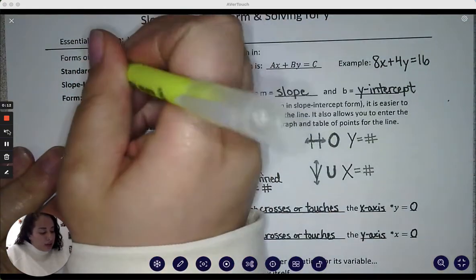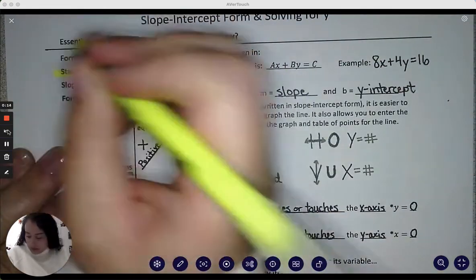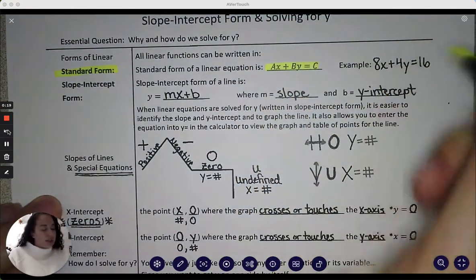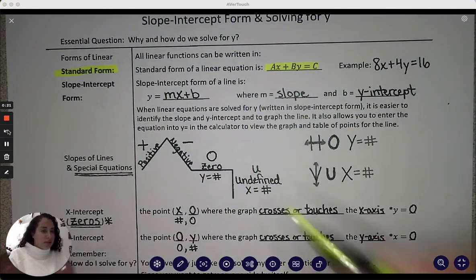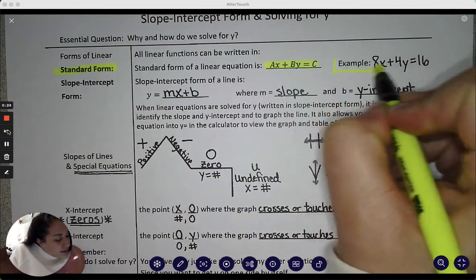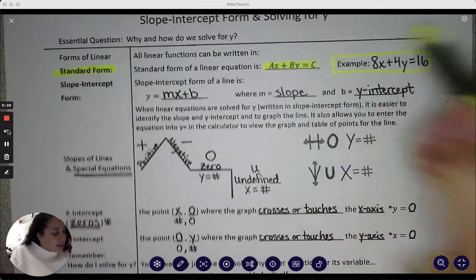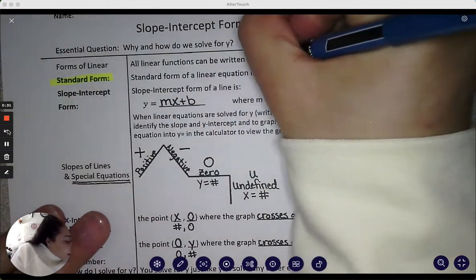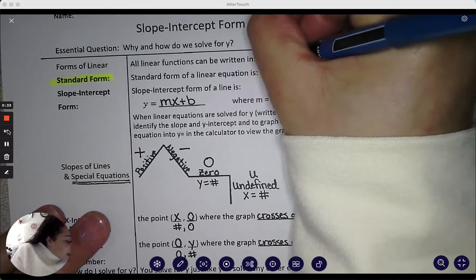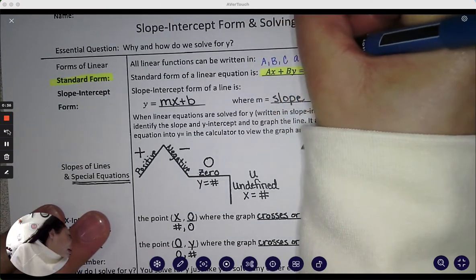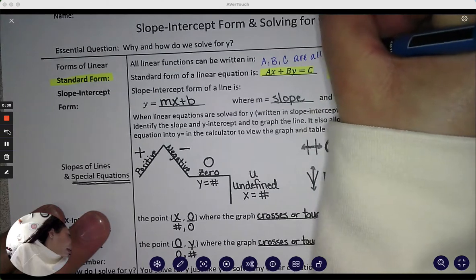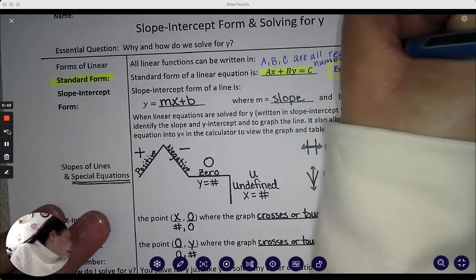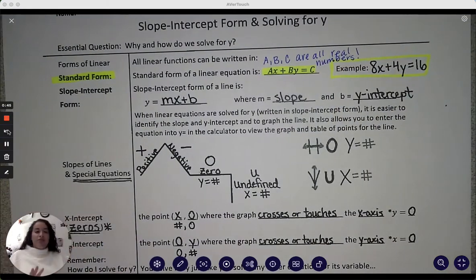So just as a reminder, standard form looks like this. We have ax plus by equals c, and here's an example. So if we have 8x plus 4y equals 16, it's important to remember that a, b, and c are all real numbers. So just a reminder, they're numbers.